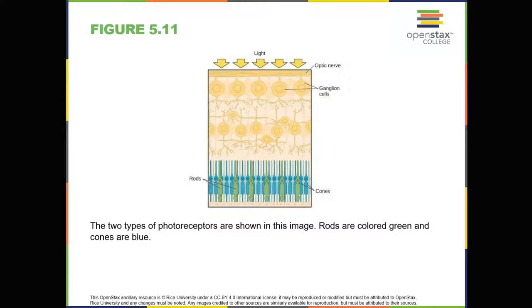The fovea contains densely packed specialized photoreceptor cells. These photoreceptor cells, known as cones, are light-detecting cells. The cones are specialized types of photoreceptors that work best in bright light conditions. Cones are very sensitive to acute detail and provide tremendous spatial resolution. They also are directly involved in our ability to perceive color. While cones are concentrated in the fovea, where images tend to be focused, rods, another type of photoreceptor, are located throughout the remainder of the retina.